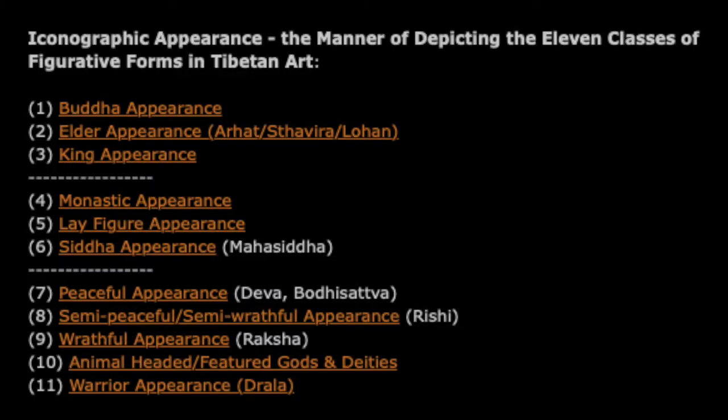There are eleven figurative forms in Himalayan art, and five of them relate to deity figures: the peaceful, semi-peaceful, semi-wrathful, wrathful, animal-featured, and the fifth and last one is warrior appearance.